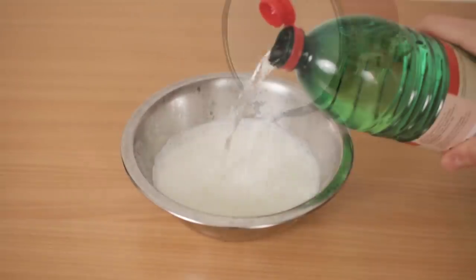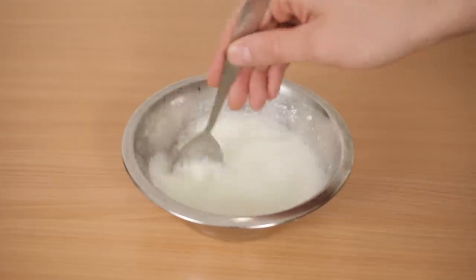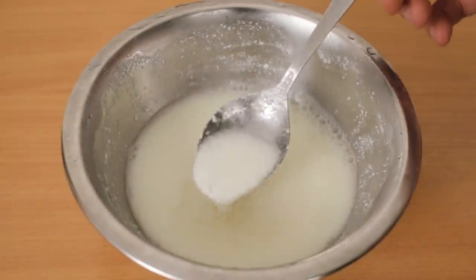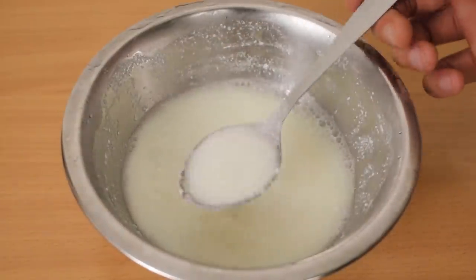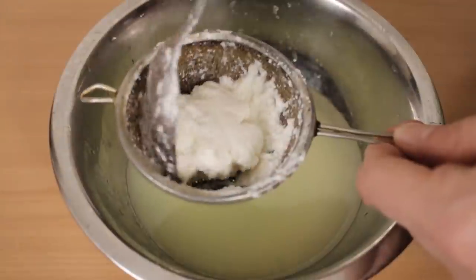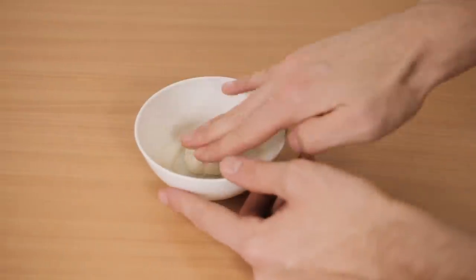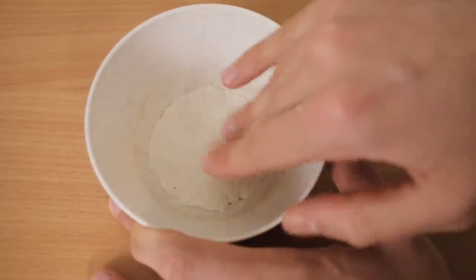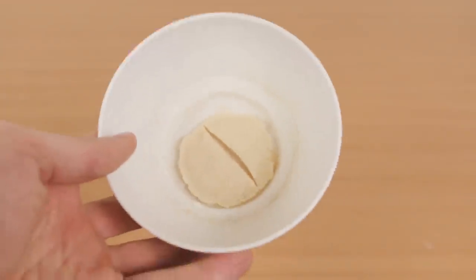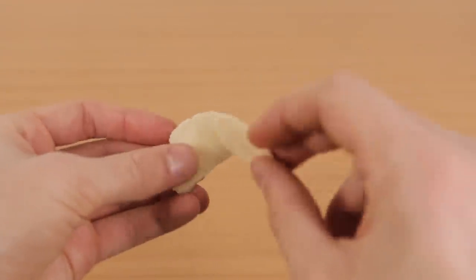You just need hot milk and vinegar. Mix the two and stir until solid clumpy chunks appear. These chunks are the casein. Once you've got a chunky mixture, drain away the liquid, and then shape the chunks whilst drying them between pieces of kitchen towels. When it completely dries over two days, you'll be left with a hard, rock-like substance that is hard to break by hand.